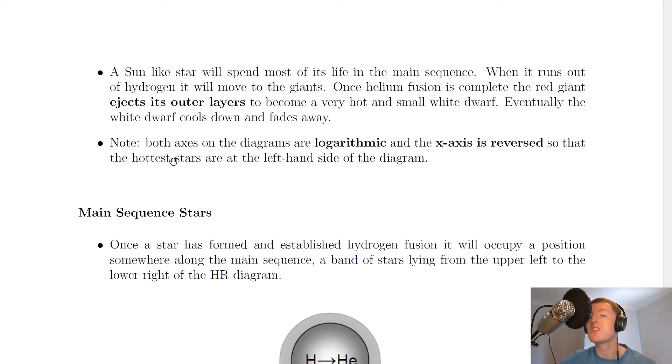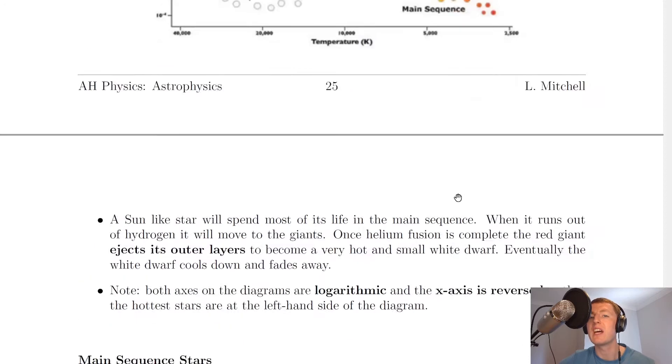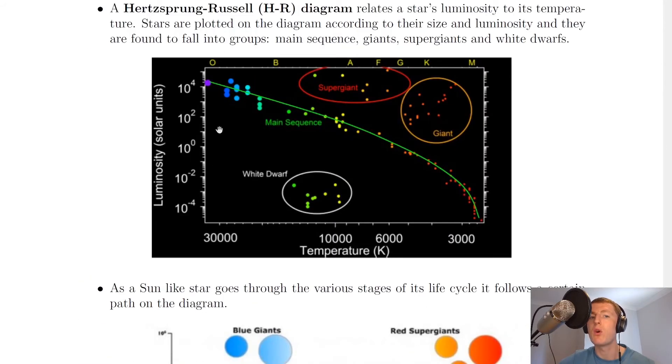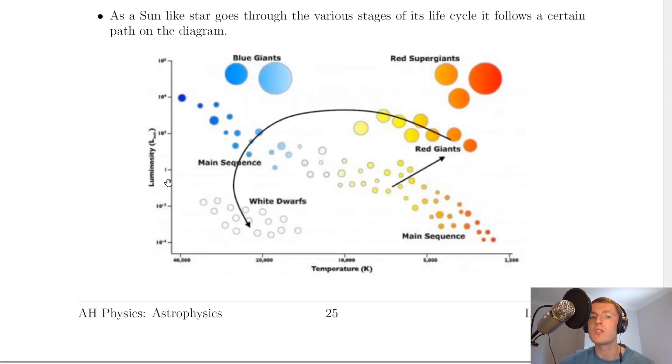The last point to note is what we said earlier, that both axes on the diagrams are logarithmic and the x-axis is reversed, so that the hottest stars are at the left-hand side of the diagram. If we look back at this diagram, we've got the hottest stars over here and the coolest stars over here. And it's the same in this one as well.